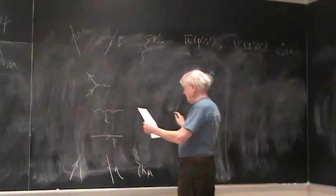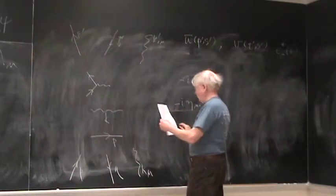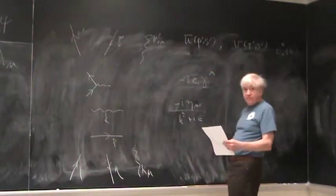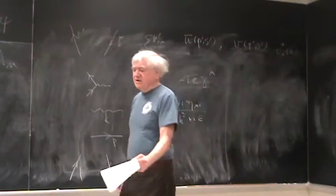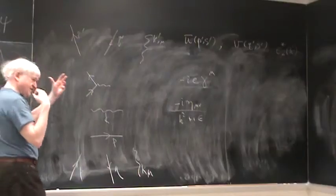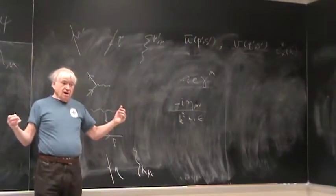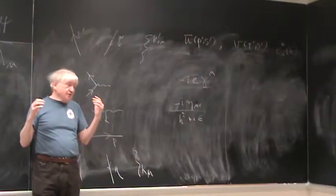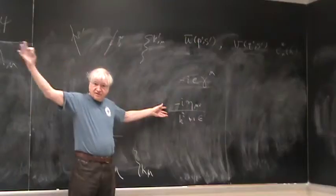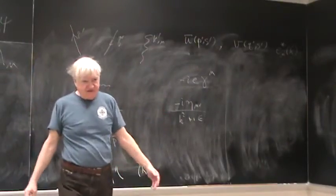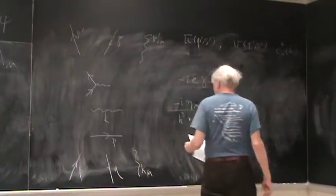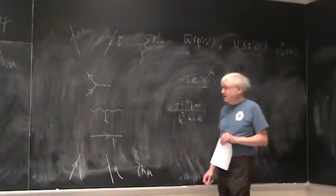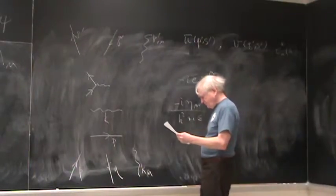For a photon line, minus i η_μν over k² plus i ε. And that's only for the Coulomb gauge. You're quantizing in Coulomb gauge, you have the instantaneous potential, you then have that miserable propagator, and then you realize that you replace the miserable propagator with a nice propagator if you ignore the instantaneous Coulomb interaction.